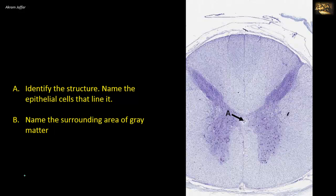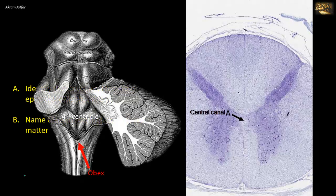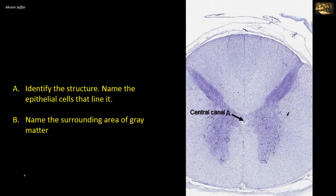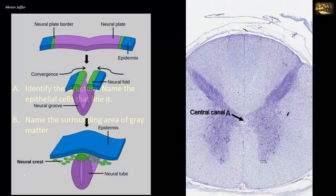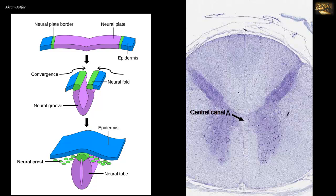This is the central canal of the spinal cord. It runs longitudinally through the entire spinal cord and is continuous with the ventricular system of the brain. The fourth ventricle narrows at a region called the obex to become the central canal of the closed part of the medulla, which continues as the central canal of the spinal cord. The central canal represents the adult remnant of the central cavity of the neural tube in the embryo.